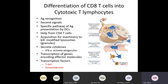CD8 T cells differentiate into cytotoxic T lymphocytes. Like CD4 cells, these T lymphocytes need APCs or antigen presenting cells to present the antigen to them. The APC enters a secondary lymphoid organ like a lymph node with the antigen it will present to naive T cells. Once interaction occurs between the APC and the naive CD8 T cell, second signals are needed — co-stimulation along with antigen recognition. If both signals are present, the naive T cell gets activated, proliferates, and differentiates into an effector T cell.